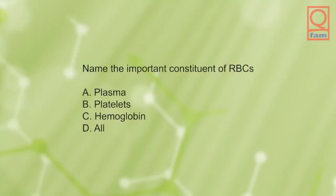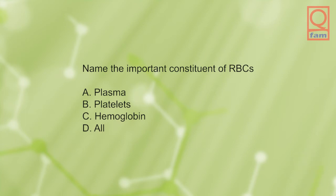Name the important constituent of RBCs: A) plasma, B) platelets, C) hemoglobin, D) all. The answer is C, hemoglobin.